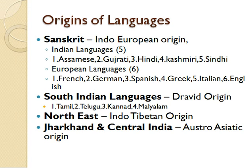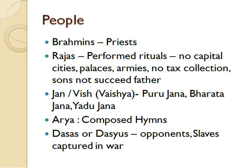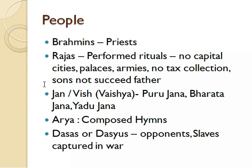With this we have come to the end of the origin of languages. The next topic is about people. Brahmins were the priests, and the rajas were different from the rulers we know today. These rajas were allowed to perform rituals, but there were no capital cities, no palaces, no armies, and no tax collection. Also, a son did not succeed the father.